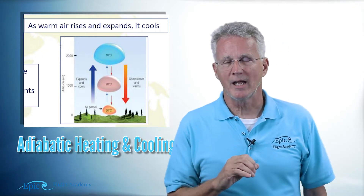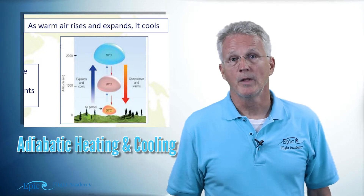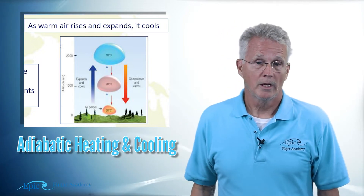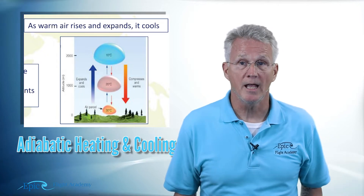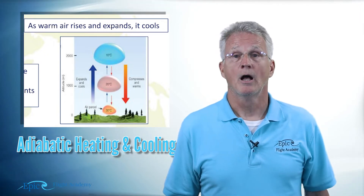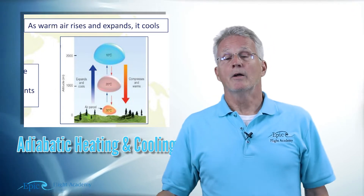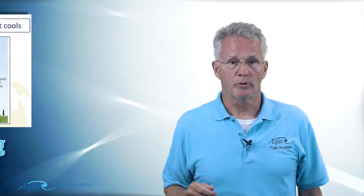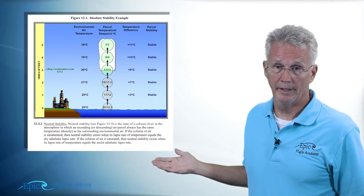Now let's examine stability in a little more detail. We're going to look at diagrams from the FAA's advisory circular on aviation weather, chapter 12. What you see here is figure 12-1.